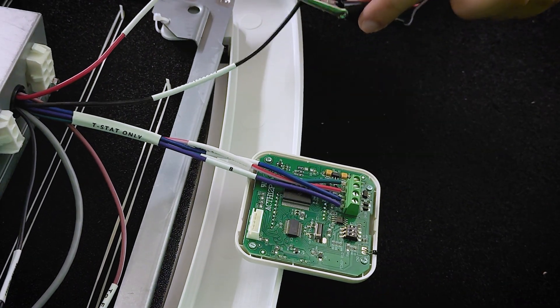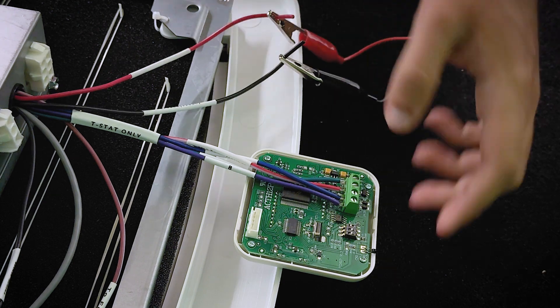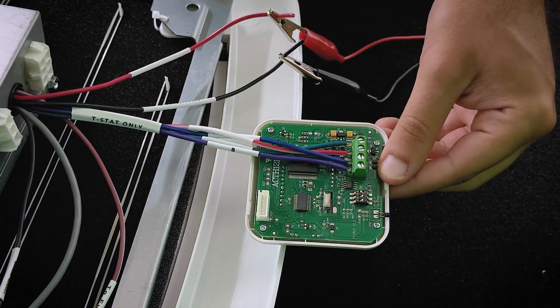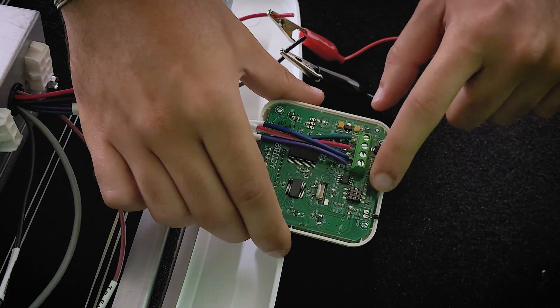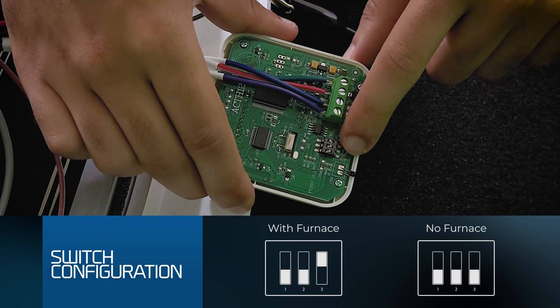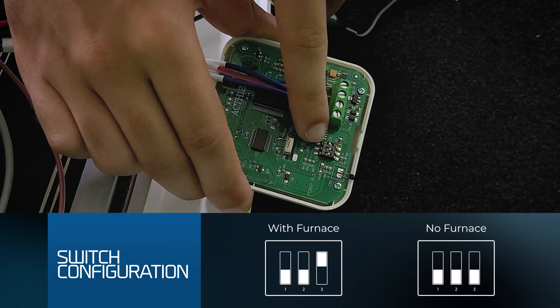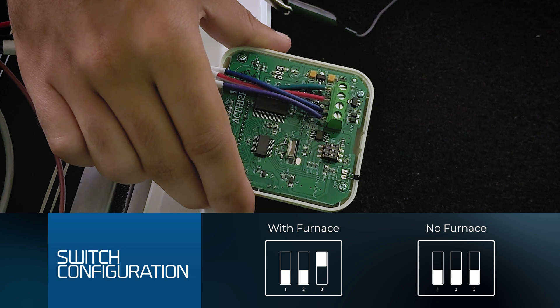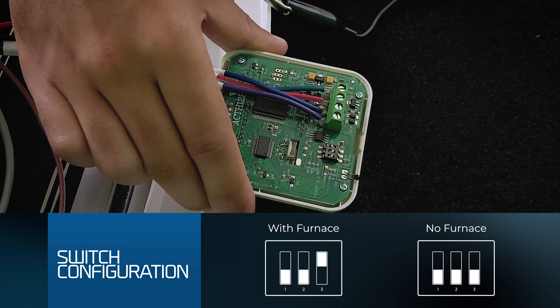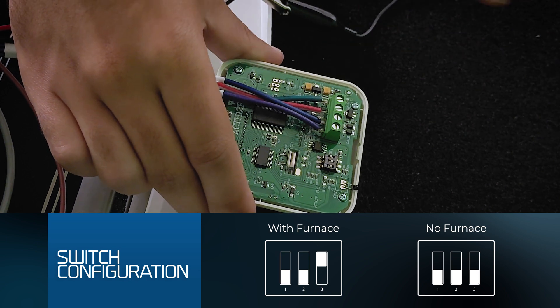Once you have 12 volts going into the control box and you have your thermostat wired properly, please note that these dip switches are if you have a furnace option. You can see we have dip switch three up right now, and that's because we do have a furnace option. If you don't, you'll have all dip switches down.